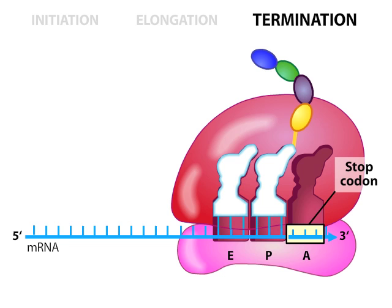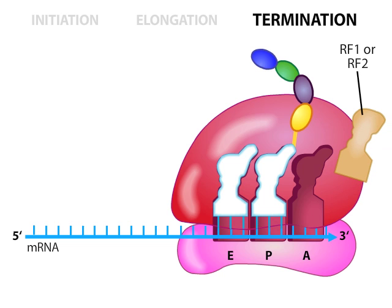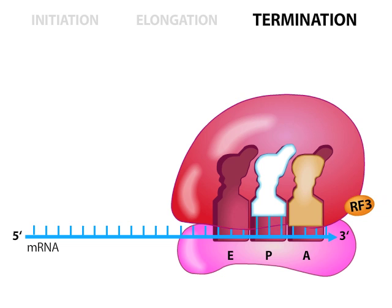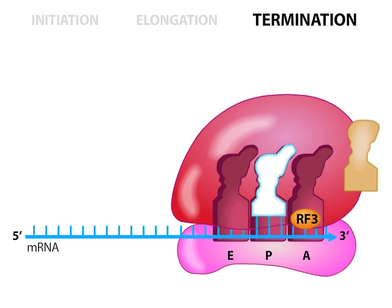No corresponding tRNAs exist for stop codons. Instead, a protein called a release factor — either RF1 or RF2 — which has the general shape of a tRNA, mimics a tRNA and enters the A site. The release factor activates the peptidyl transferase function of the ribosome, which cuts the bond tethering the completed peptide to tRNA in the P site. Another factor, called RF3, then triggers RF1 or RF2 to depart the ribosome.